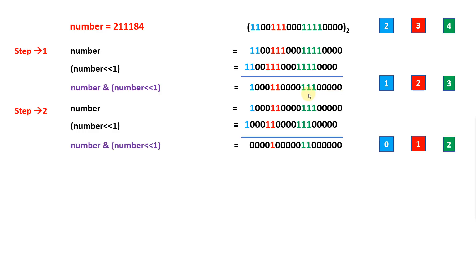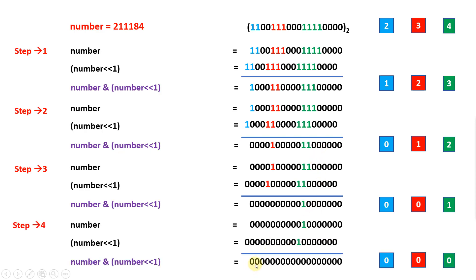Now perform the same step again. This time the number will be this, and we calculate the left shift and again perform the AND operation. After this AND operation, each sequence is reduced by 1 again. If you perform the same operation again and again, finally all become 0, so we don't need to perform this operation anymore. We have to perform this operation until we get 0, and each step is a counter because every step we are reducing 1 from every sequence. If there are four consecutive ones, there will be four steps because this is the maximum number of 1s.